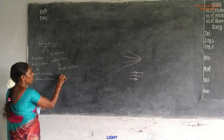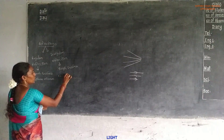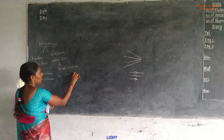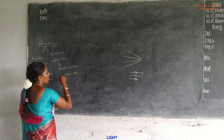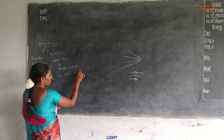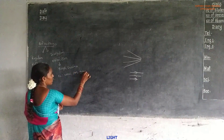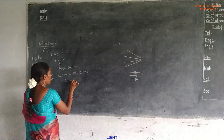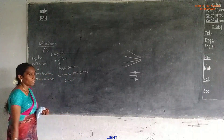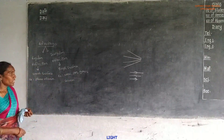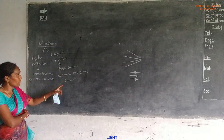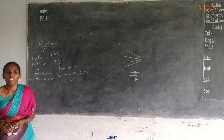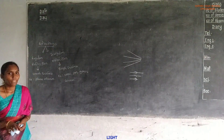Examples of rough surfaces are wood, pan, grass, and screen. These are all rough surfaces. The reflection that takes place on these rough surfaces is called irregular reflection.